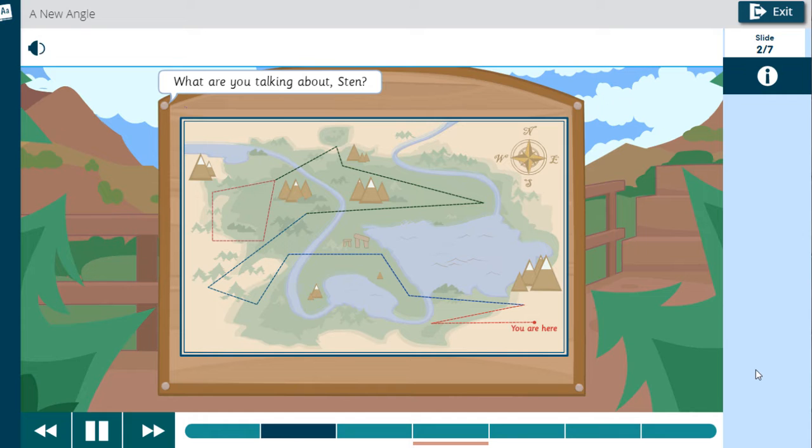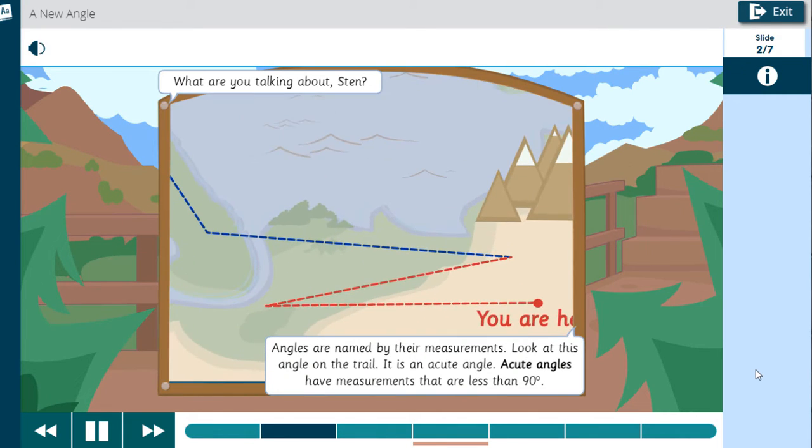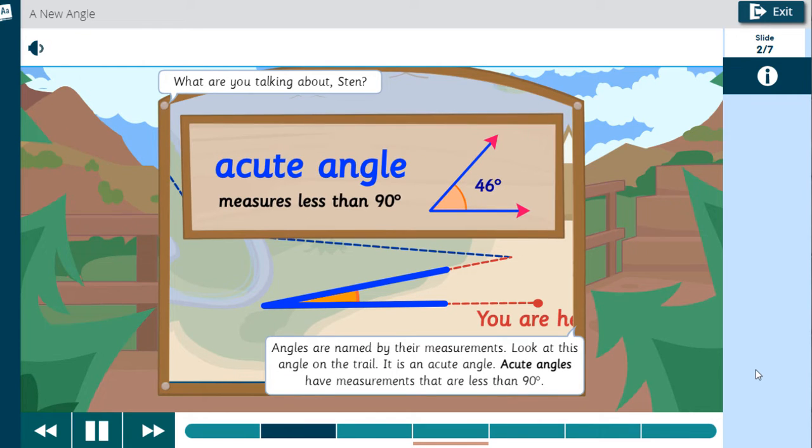What are you talking about, Stan? Angles are named by their measurements. Look at this angle on the trail. It is an acute angle. Acute angles have measurements that are less than 90 degrees.